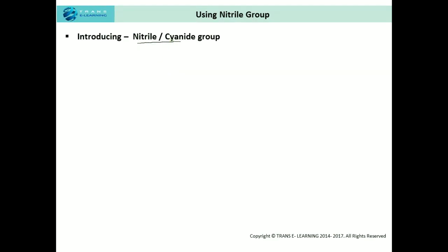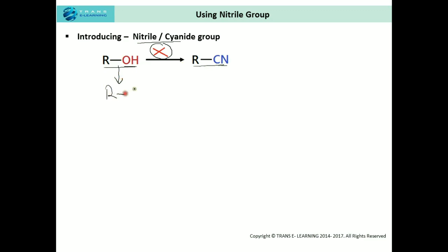First, introducing the nitrile or cyanide group. As shown here with a cross, the direct conversion of aliphatic alcohol to alkyl nitrile is not possible. So we cannot convert alcohol into nitrile directly. Instead, we first need to convert alcohol into alkyl halides, and then convert alkyl halides into nitrile by introducing the cyanide group.